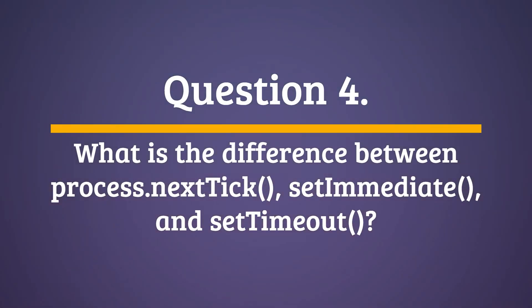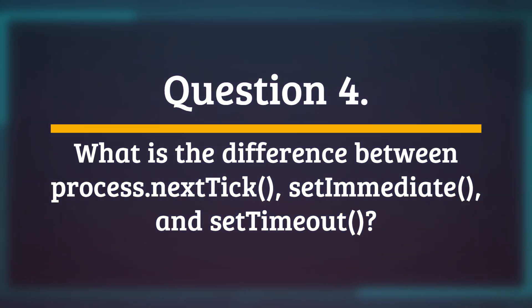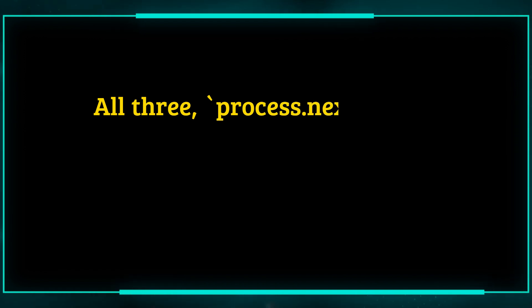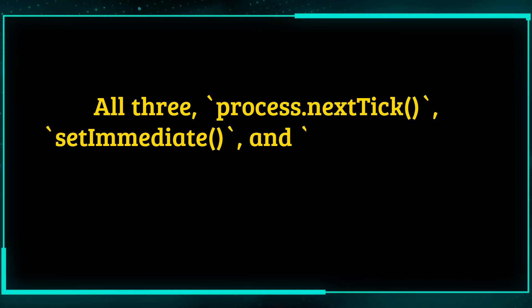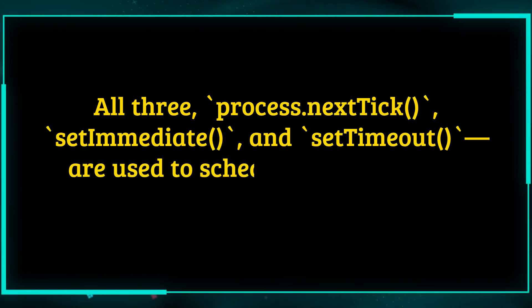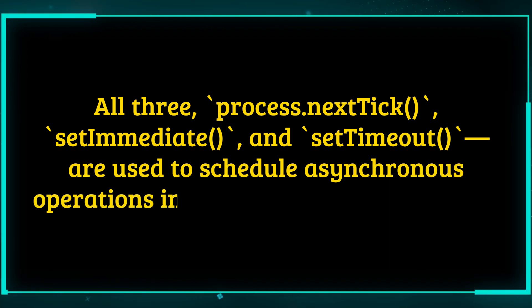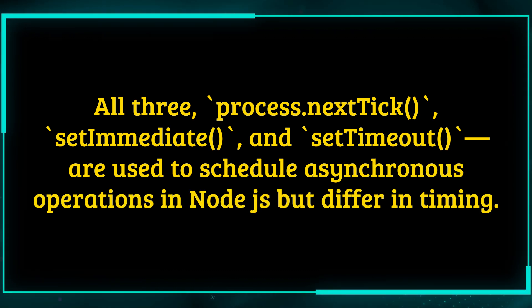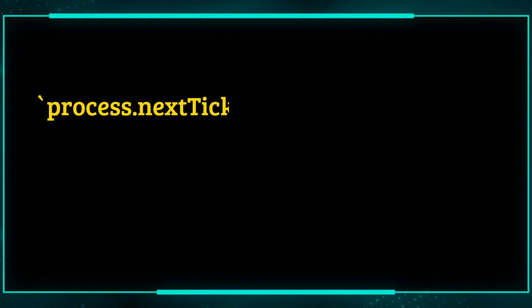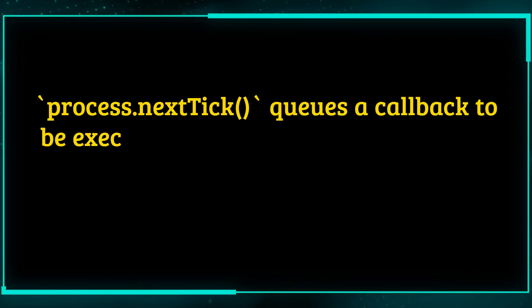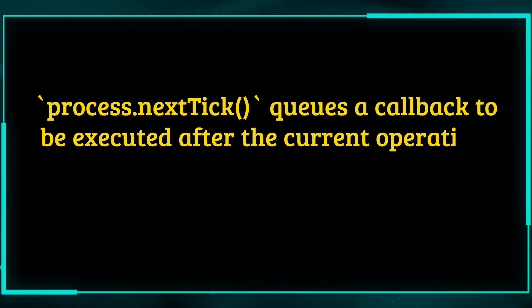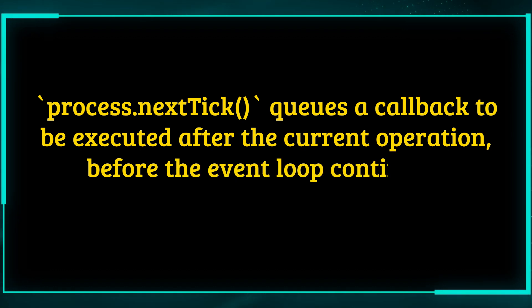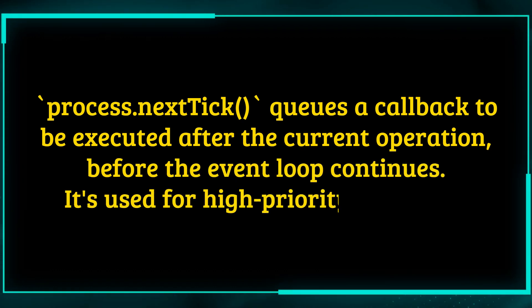Question 4. What is the difference between process.nextTick, setImmediate, and setTimeout? Answer. All three are used to schedule asynchronous operations in Node.js but differ in timing. process.nextTick queues a callback to be executed after the current operation, before the event loop continues. It's used for high-priority callbacks.